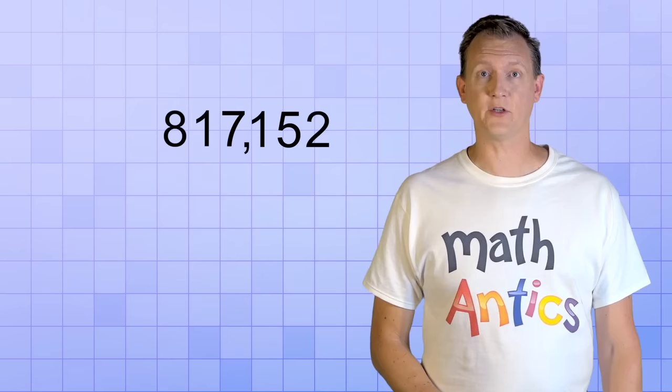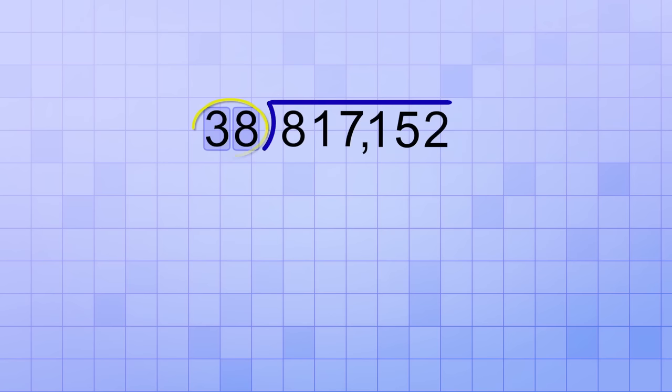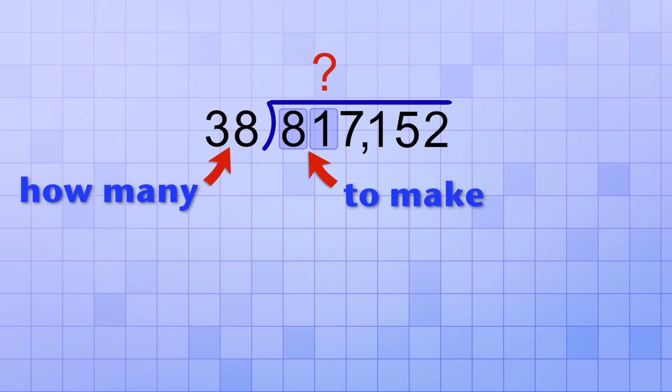Let's try one more, much longer, two-digit divisor problem. 817,152 divided by 38. I'm going to work through this kind of fast, so you may want to re-watch it a couple times if you have trouble following it. Since we have a two-digit divisor, we start with the first two digits of the dividend and ask, how many 38's will it take to make 81? Again, we're going to use rounding to help us estimate the answer.